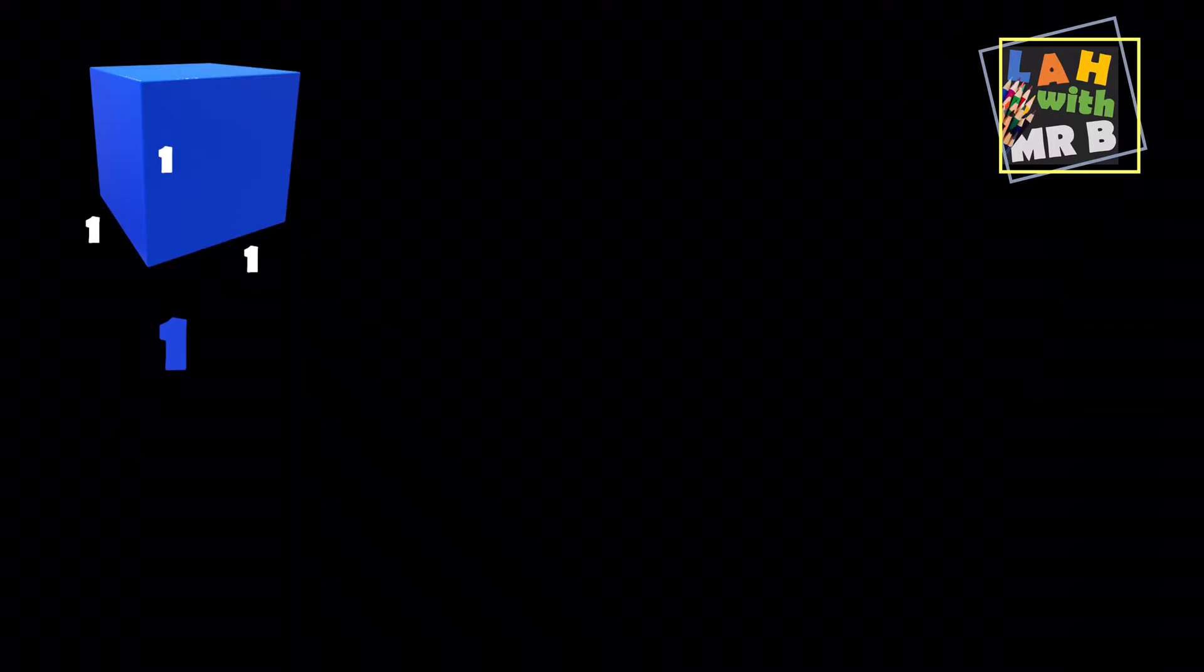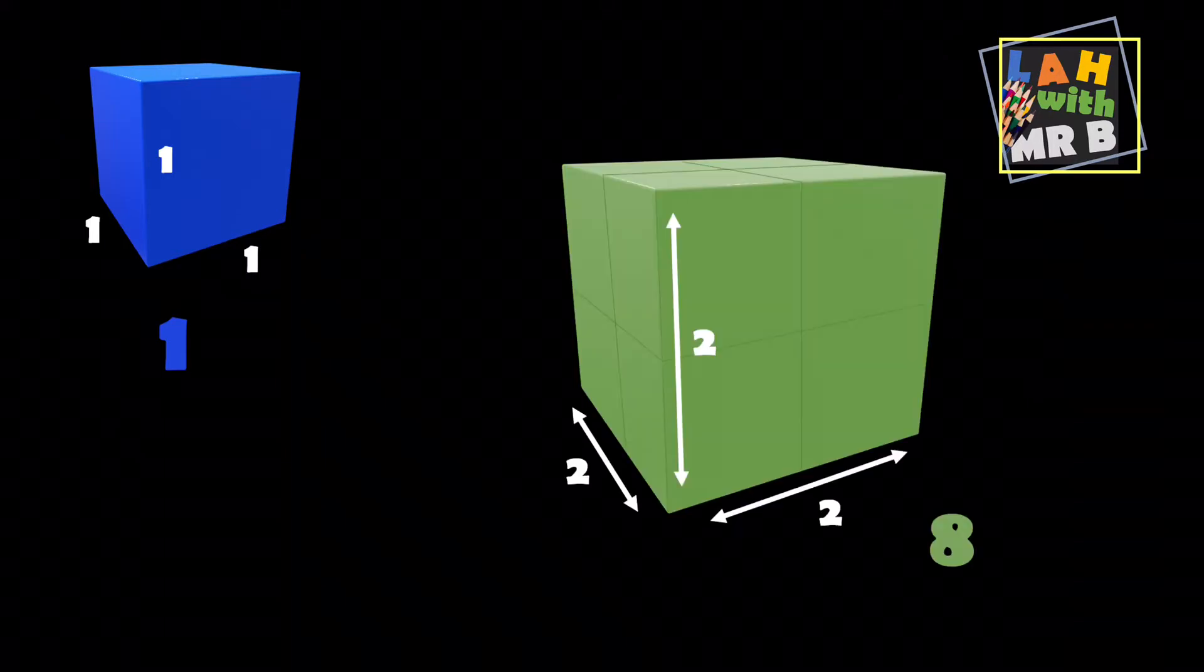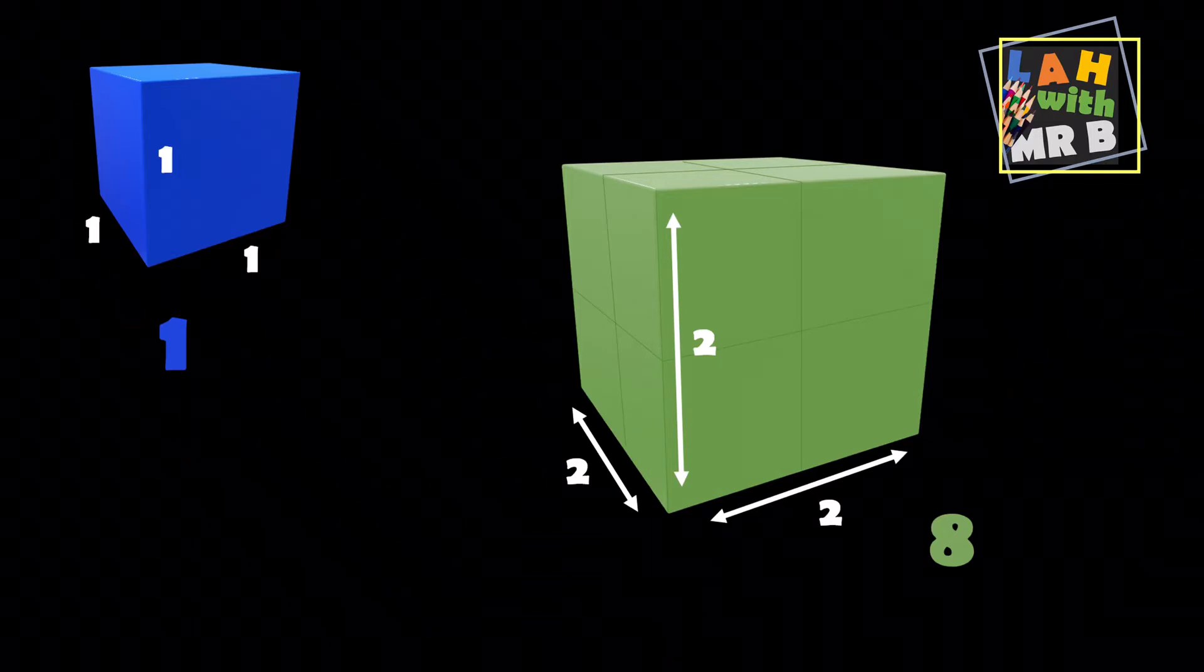Let's go ahead and have a go at cubing the number two. So we're going to have to have two cubes going up, two cubes across, and two cubes deep. If we were to count all these up, we'd find that we need to use eight cubes to make a shape that's two up, two across, and two deep. So therefore, we can say that two cubed gives us eight.